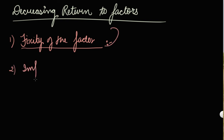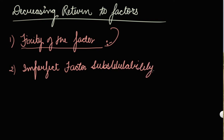The second cause is imperfect factor substitutability. For more and more production, we need raw materials, and along with raw materials, we need capital, land, and more machines. Your raw material cannot be completely substituted by your fixed factors. You cannot substitute your variable factors for your fixed factors all the time. So at some point in time, you will be getting decreasing returns to factors.